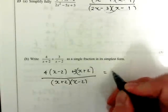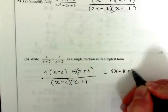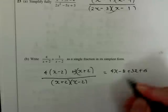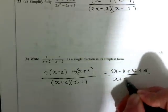Now, if we simplify the top, we'll expand it to start with 4x minus 8 plus 3x plus 6. Can't do much with the bottom at the moment, so we'll leave that as it is.